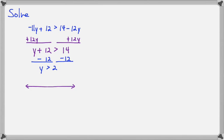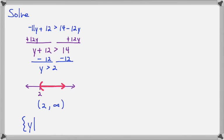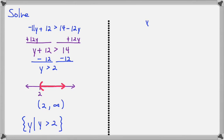Let's graph it — we shade to the right and use a parenthesis. Our interval notation is parenthesis 2 comma infinity, from 2 to infinity. Our set notation is the set of all y's such that y is greater than 2.